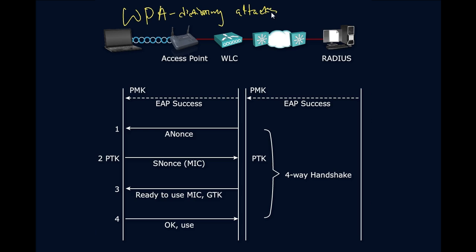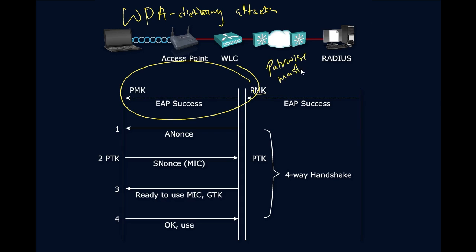Let's take a look at this process. First off, I'm going to condense the EAP process that you should already know. We get an EAP success, and we get the PMK — the Pairwise Master Key. This pairwise master key is given to the supplicant, or client. The access point also derives the pairwise master key given all the information that has been exchanged. Now we have a secured conversation that can take place.